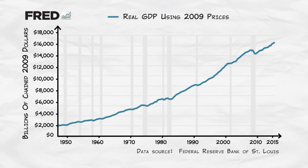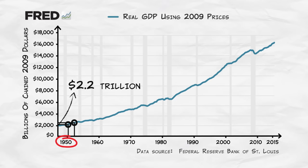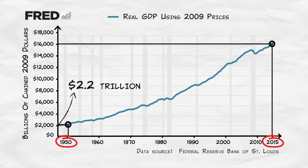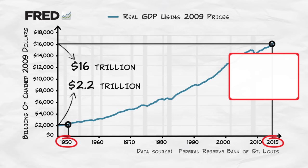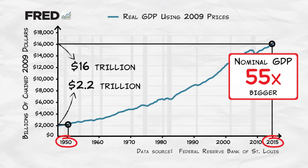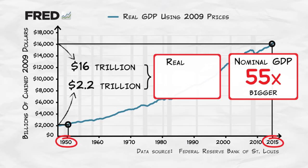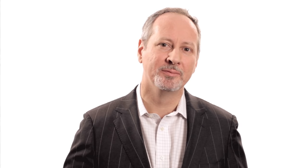Here's what we get. This graph measures real GDP in 2009 dollars — that means using 2009 prices consistently. This graph tells us that in 1950, all the goods and services produced at that time were worth about $2 trillion. In comparison, in 2015, all the goods and services produced were worth about $16 trillion. So while nominal GDP says the economy is 55 times bigger, real GDP shows us it's 8 times bigger — still pretty good, but a big difference.